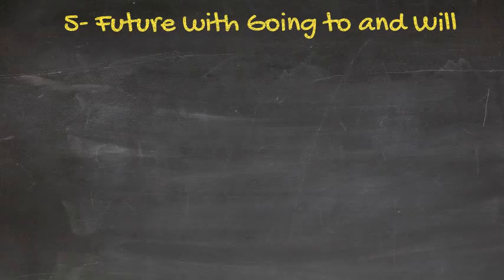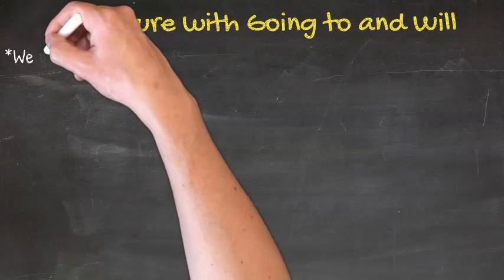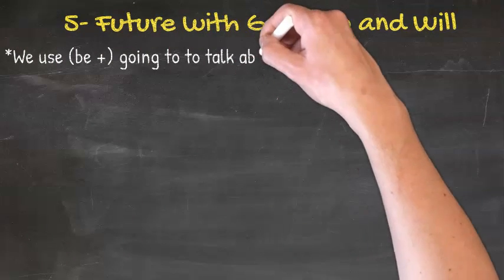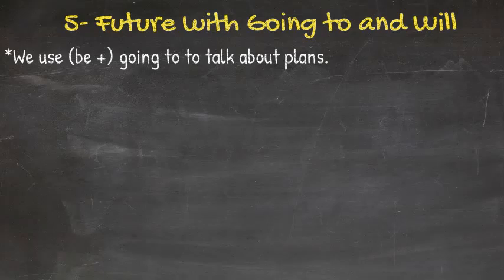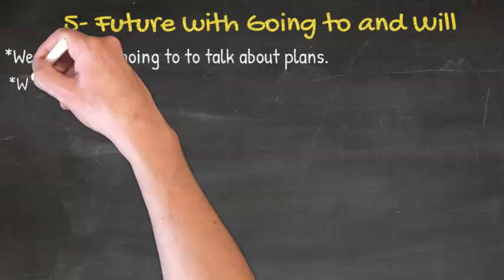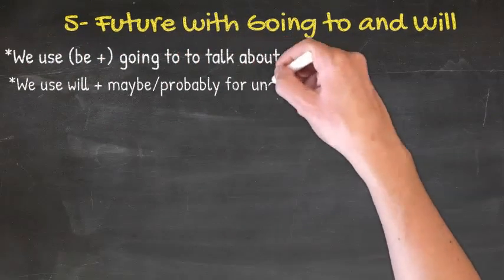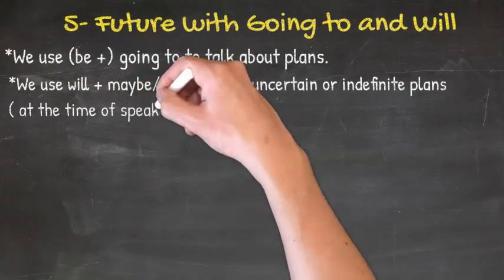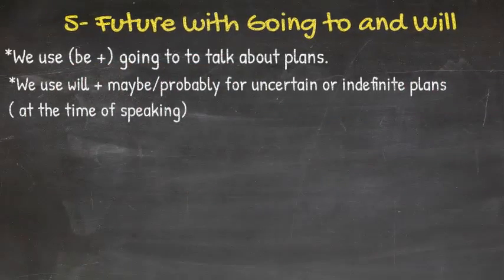The fifth part of our lesson, future with going to and will. We use be going to to talk about plans. We use will plus maybe or probably for uncertain or indefinite plans at the moment.